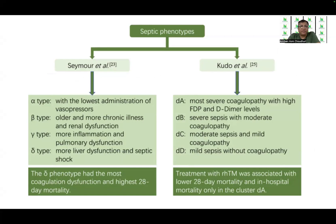If we compare what Seymour found on the basis of the four phenotypes with what Udo et al. found on the basis of the coagulation phenotypes — where he identified four phenotypes: DA, the most severe coagulopathy with high FDP and D-dimer levels; DB with severe sepsis and moderate coagulopathy; followed by moderate sepsis with mild coagulopathy; and mild sepsis without coagulopathy — then according to Seymour's study, the delta phenotype had the most coagulation dysfunction and the highest 28-day mortality. According to Udo et al., treatment with thrombomodulin was associated with lower 28-day and in-hospital mortality only in cluster DA. So if we can extract the coagulation dysfunction from the delta subphenotype and correlate it with the effect of thrombomodulin, it will be possible to decide upon treatment more effectively.